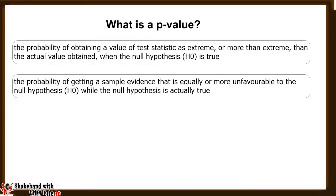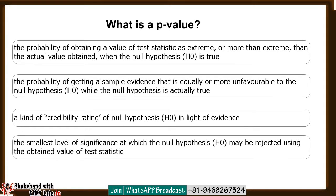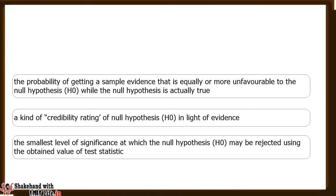Therefore, the p-value is a kind of credibility rating of H0 (the null hypothesis) in the light of evidence. Hence, the p-value is the smallest level of significance alpha at which the null hypothesis may be rejected using the obtained value of the test statistic. Now let's look at the rule of rejecting or accepting a null hypothesis on the basis of p-value.